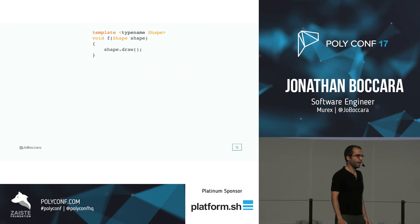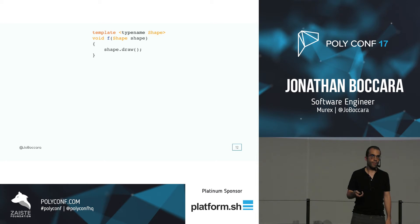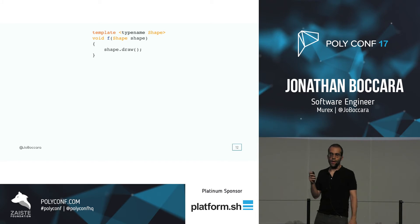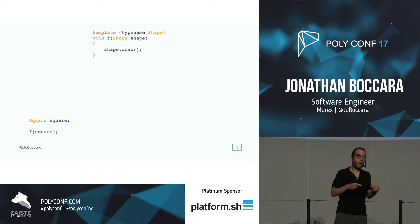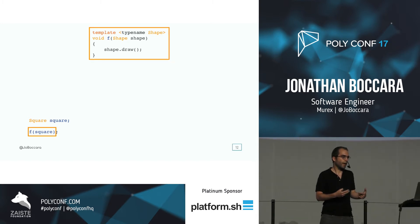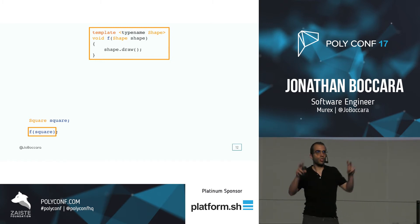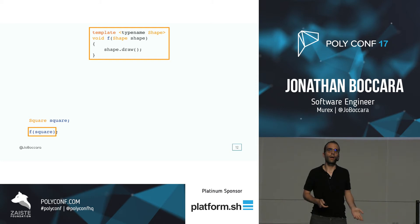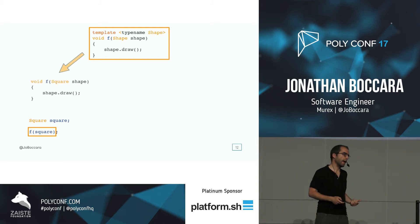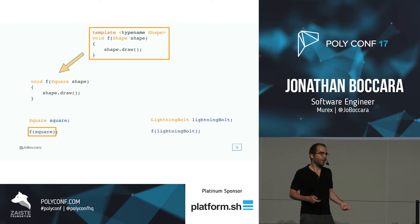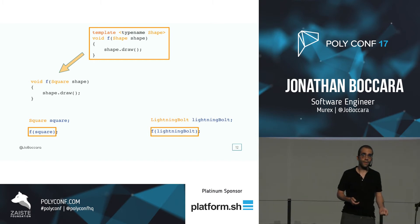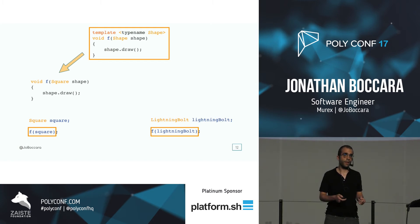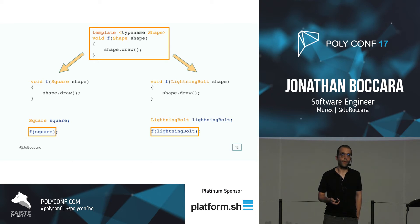I've got this function f that takes a 'shape,' but shape is not a type — it's a template, because it's written 'template' just above. I'm going to use this function in some calling code. I still have my class square, and I pass it to f. The compiler recognizes I'm calling f with type square, so it knows that 'shape' in that particular call means square. It instantiates code using square and calls its method 'draw' on it. If I use it with another type — lightning bolt — the same thing happens. The compiler instantiates new code using lightning bolt. That's polymorphism; the contract is still having a method called 'draw' taking no parameter.